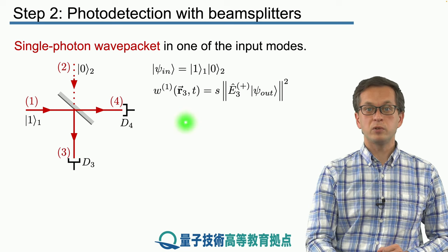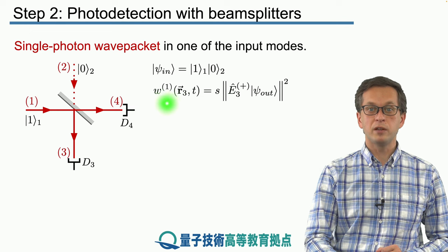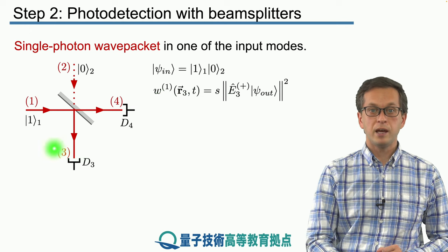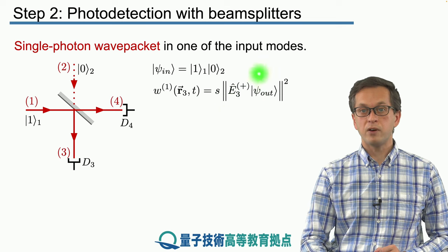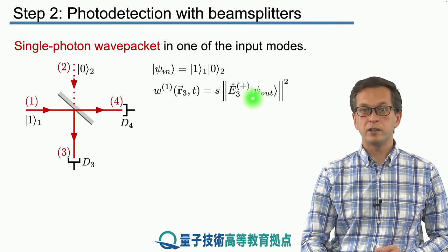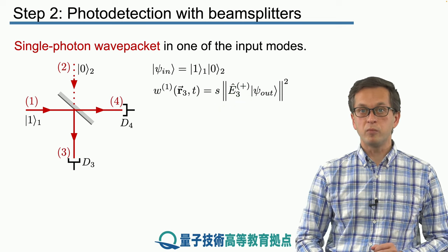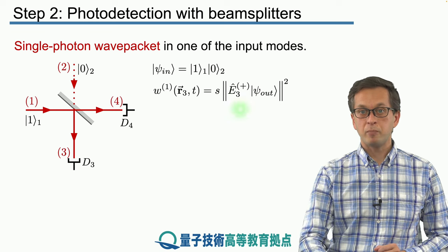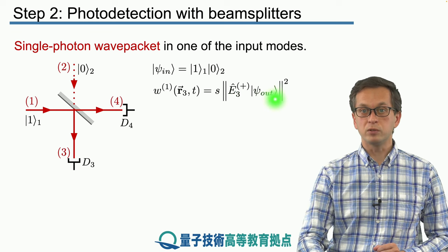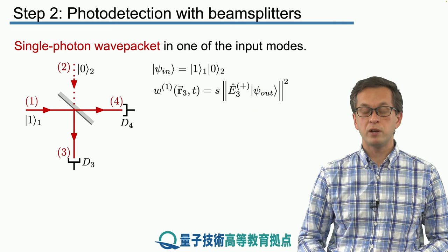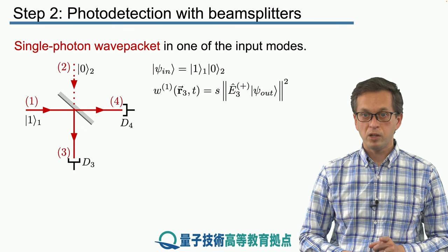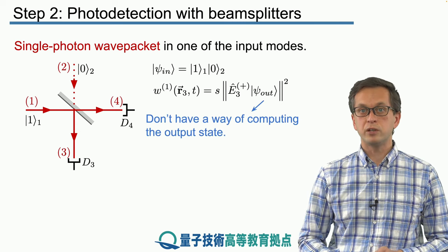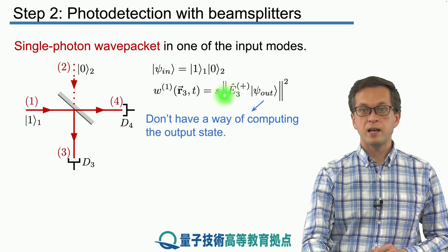And we are looking to compute the photodetection signal W1 at position R3 and time T. So we know how to do that. We have our field operator E3 describing our mode 3 applied to the state of the mode psi out. And we need to take the modulus squared and multiply by the sensitivity of the detector S. The only problem is we don't know how to compute this psi out.